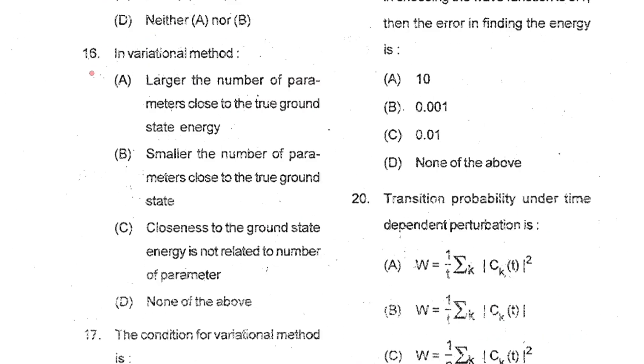Question number 16: In variational method, larger the number of parameters, closer to the ground state energy.